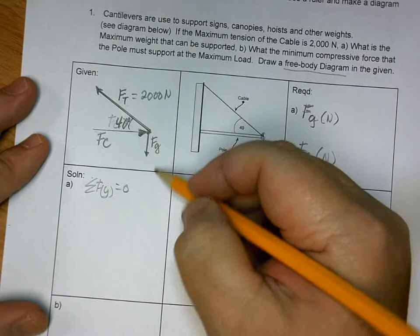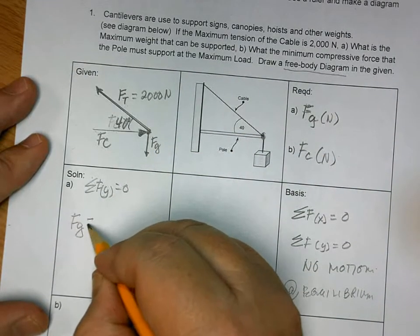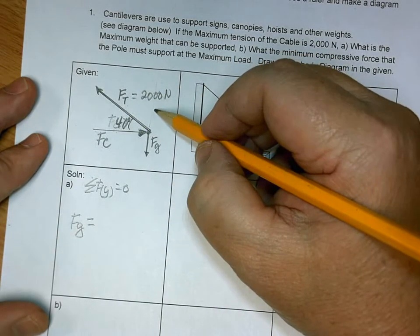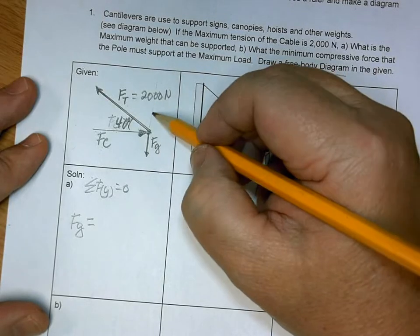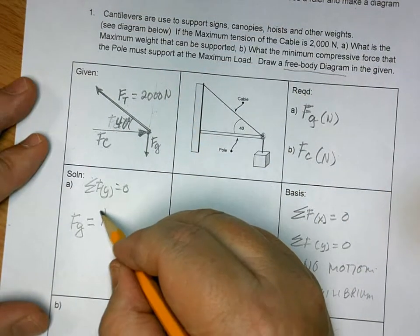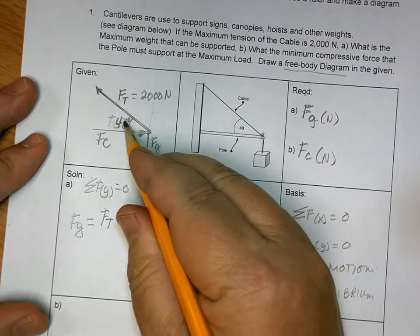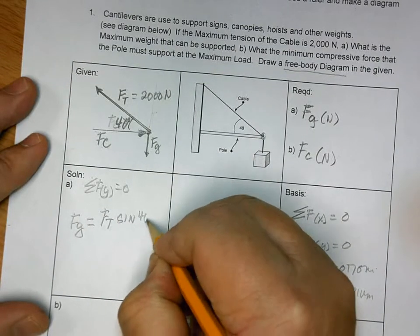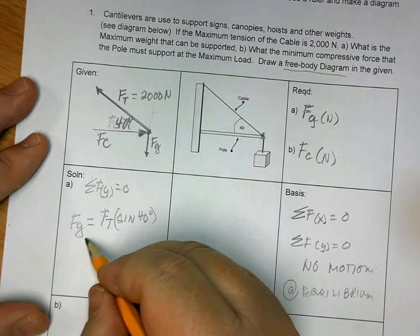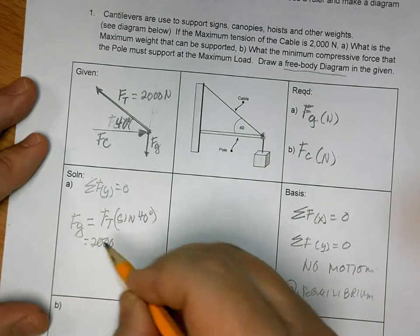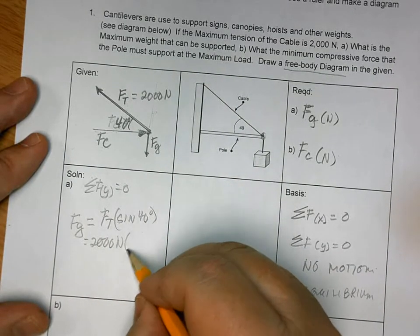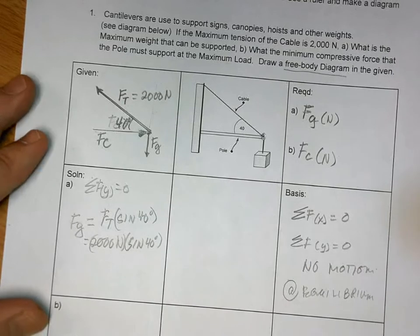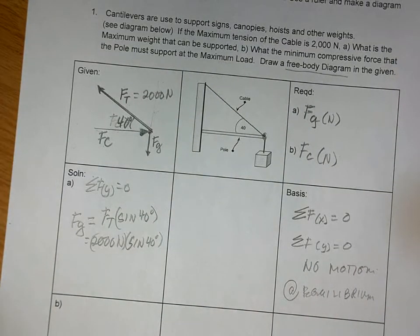So here we'll start with the summation of forces along the Y is equal to zero. And what are the Y forces? FG is going down. And what is balancing it off? Well, there's a component here for this force. We used to call it FT Y, but now we're just going to say FT, and it's not touching, right? This is not touching that, so sine 40 degrees. Which is what? 2,000 newtons times sine of 40 degrees.